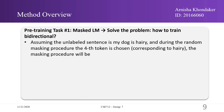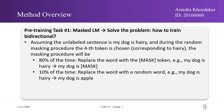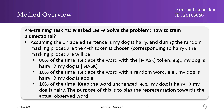For example, assuming the unlabeled sentence is 'my dog is hairy' and during the random masking procedure the fourth token 'hairy' is chosen, the masking procedure will be as follows. 80% of the time, the word will be replaced with the mask token, so 'my dog is hairy' becomes 'my dog is [MASK]'. 10% of the time, the word will be replaced with a random word, so it could be 'my dog is apple'. 10% of the time, the word will be unchanged, so 'my dog is hairy' stays 'my dog is hairy'.